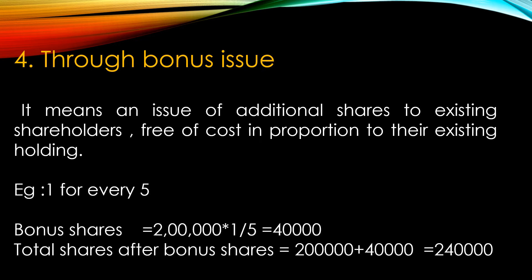For example, अगर company issue करती है one for every five, तो यहाँ पर हर shareholder के हर five shares पे उस shareholder को एक share as a bonus share दिया जाएगा. Now, if suppose किसी company में two lakh shares already issued हैं, और company issue करने वाली है bonus shares as one for every five, तो company कितने shares issue करेगी - two lakh multiply by one divided by five, which is equal to 40,000 shares. और उसके बाद जो total shares हो जाएंगे company में after bonus shares वो हो जाएंगे two lakh (existing) plus 40,000 (bonus) which is equal to two lakh 40,000 shares.